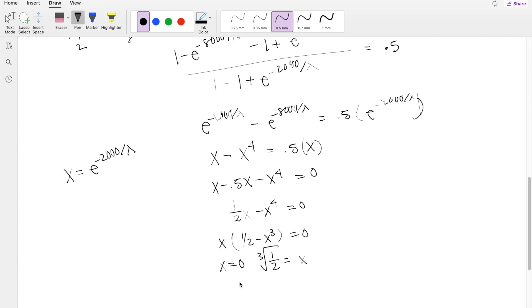So then plugging that in, when I plug in 0 for X here, taking a natural log, that does not work because natural log of 0 just does not exist. So let's try the other point then. Cube root of one half is equal to e to the negative 2,000 over lambda. So then taking natural log here, natural log of cube root one half is equal to negative 2,000 over lambda.